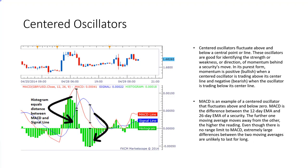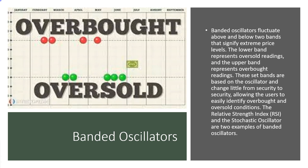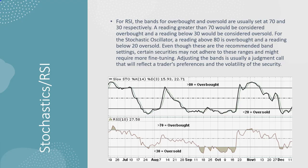Banded oscillators fluctuate above and below two bands signifying extreme price levels: the lower band represents oversold readings and the upper band represents overbought readings. RSI typically uses 70 and 30 — anything above 70 could be classified as overbought, anything below 30 as oversold. Stochastics often uses 80 and 20. You can modify these to 75/25, 60/40, or 80/20 depending on your strategy, but they remain bounded between 0 and 100.